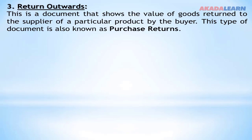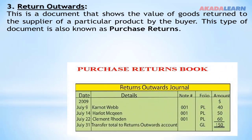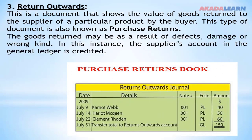Return outwards are documents that show the value of goods returned to the supplier of a particular product by the buyer. This type of document is also known as the purchase return. The goods returned may be as a result of defect, damage, or wrong kind. In this instance, the supplier's account in the general ledger is credited.